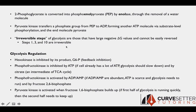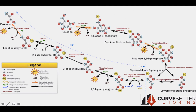Hexokinase, which catalyzes the first step of glycolysis, is going to be inhibited by its product, glucose-6-phosphate. That makes sense — it's just a form of feedback inhibition. If a lot of glucose-6-phosphate is accumulating, hexokinase should probably slow down, because if this molecule is accumulating that means it's not being used in the rest of glycolysis, and this first step needs to slow down to match the pace of the rest of the pathway.